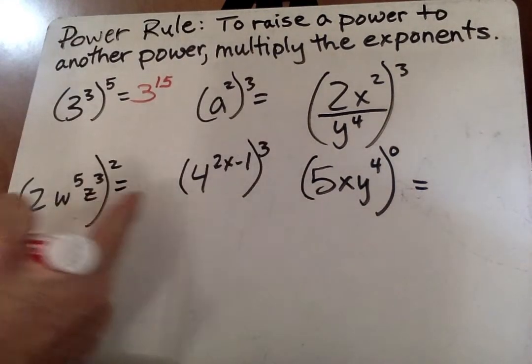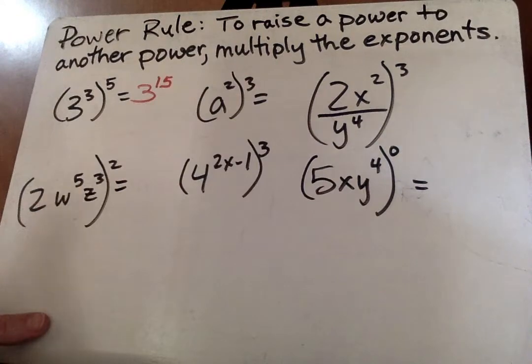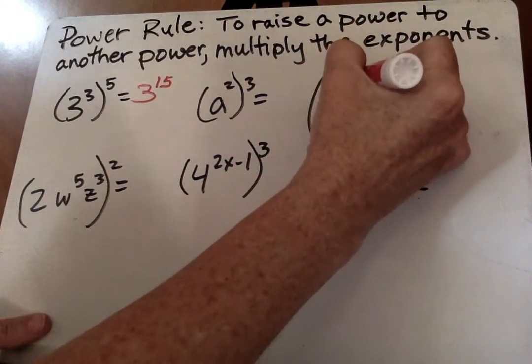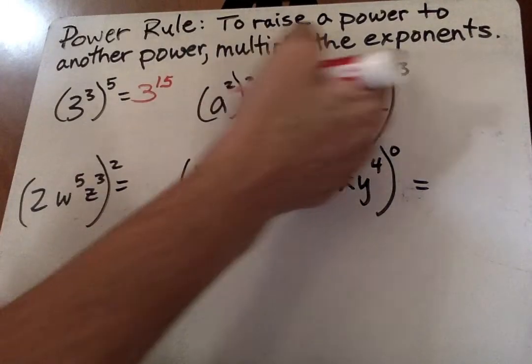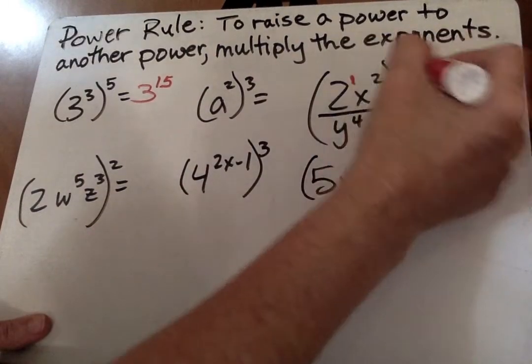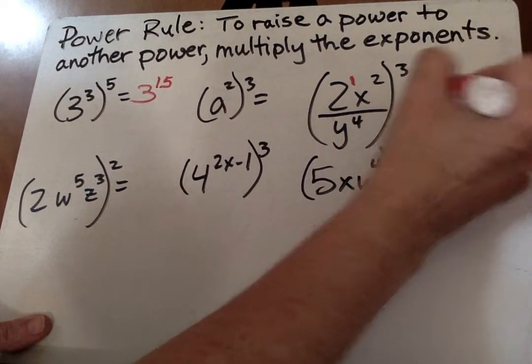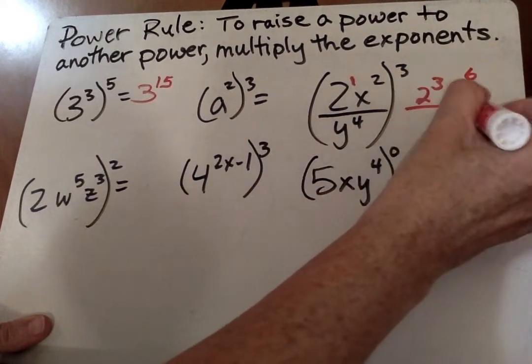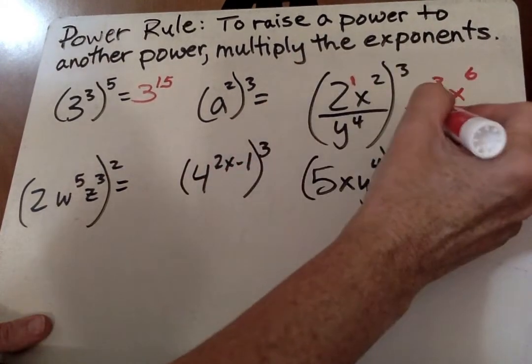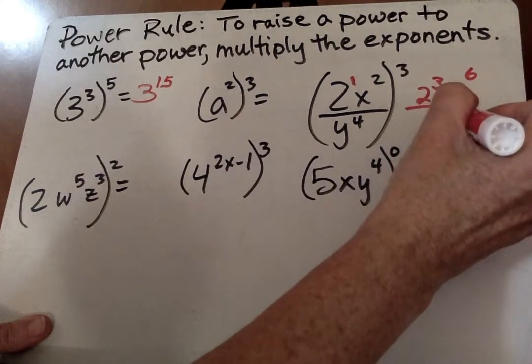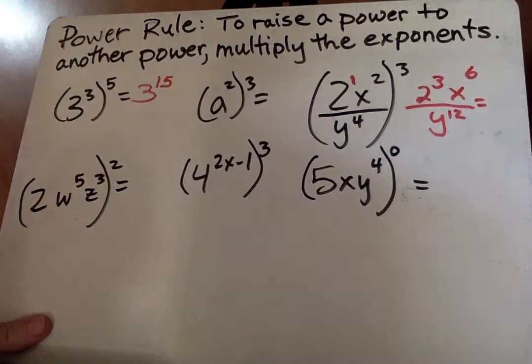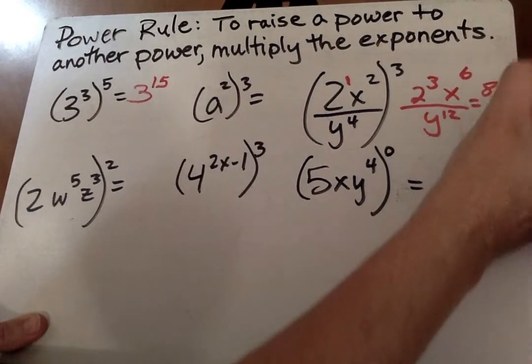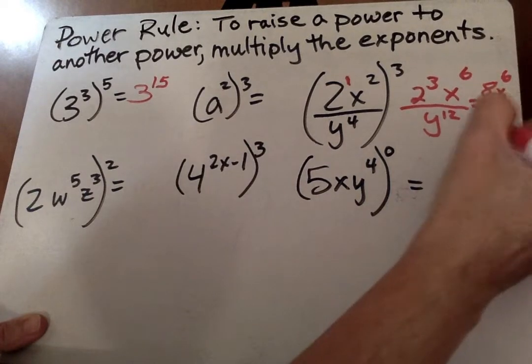Then I'm going to go over and I will do this one with numbers with it. Now, this power right here, when nothing is there, it's 2 to the first power. Now, 1 times 3 is 3. So that's 2 to the third power. X, 2 times 3 is 6 over 4 times 3 is 12. And then we simplify our 2 to the third and we get 8X to the sixth over Y to the twelfth.